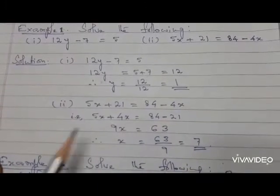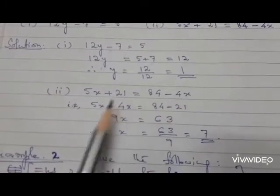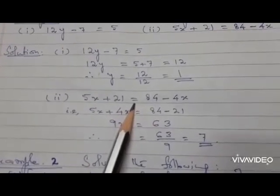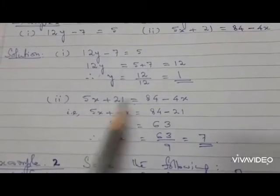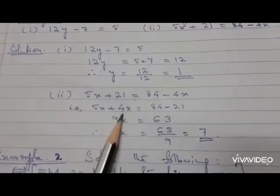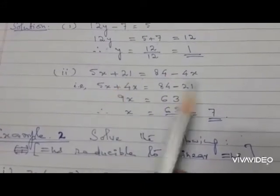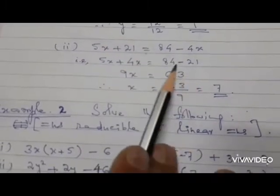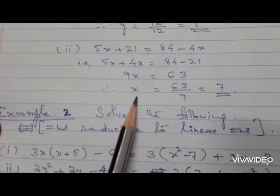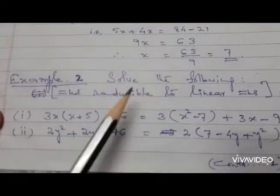Now the second question: 5x + 21 = 84 - 4x. The difference here is that both left and right sides have expressions. We'll keep variable terms on the left side. 5x is already on the left, so bring -4x from right to left to get 9x. The number 21 goes to the right side as -21. So 9x = 84 - 21 = 63, giving x = 63/9 = 7.